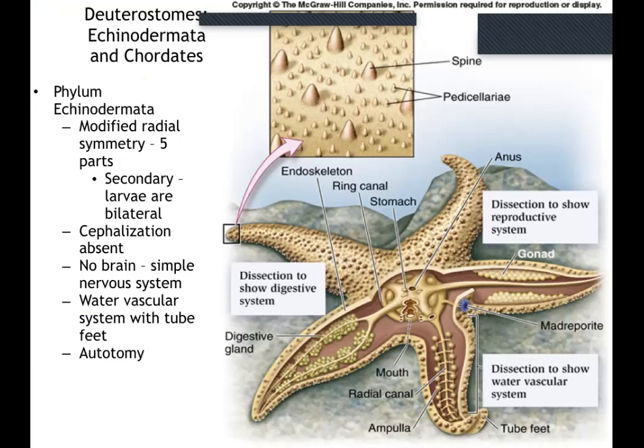So here is our starfish. You can see that it doesn't really have cephalization — remember, cephalization is having a head with eyes forward. A lot of animals have cephalization, but starfish don't. They can move around relatively quickly. They have spines on them, tend to have five parts, and do have larvae that have bilateral symmetry. But they have no brain, a simple nervous system, a water vascular system with tube feet, and the ability of autonomy.